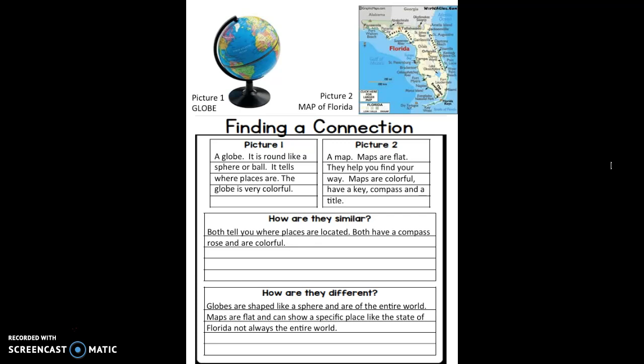Whereas maps are flat and can show a specific place, like the state of Florida, and not always of the entire world. Some maps do, but in this case, this map is simply of our state, Florida.